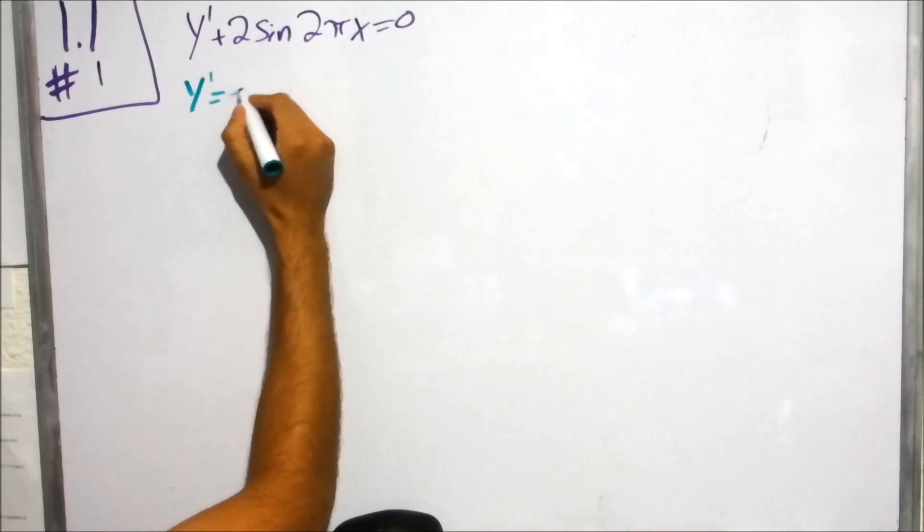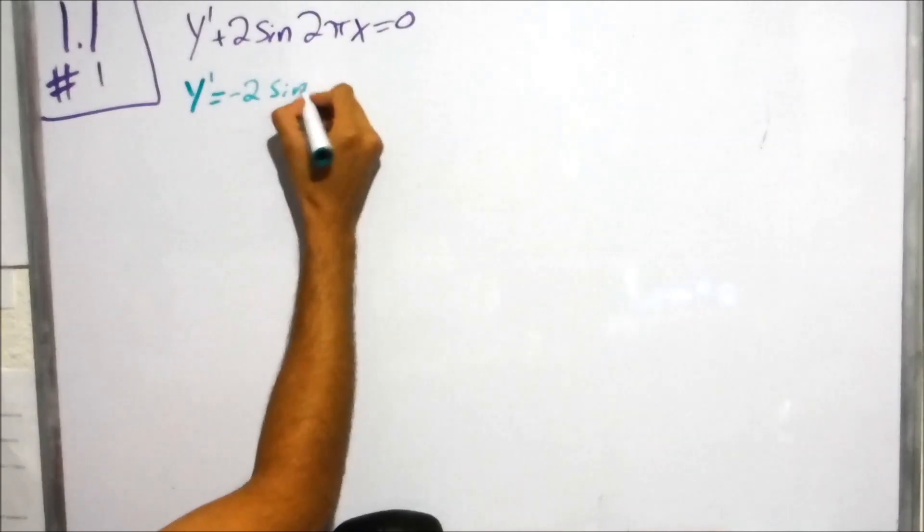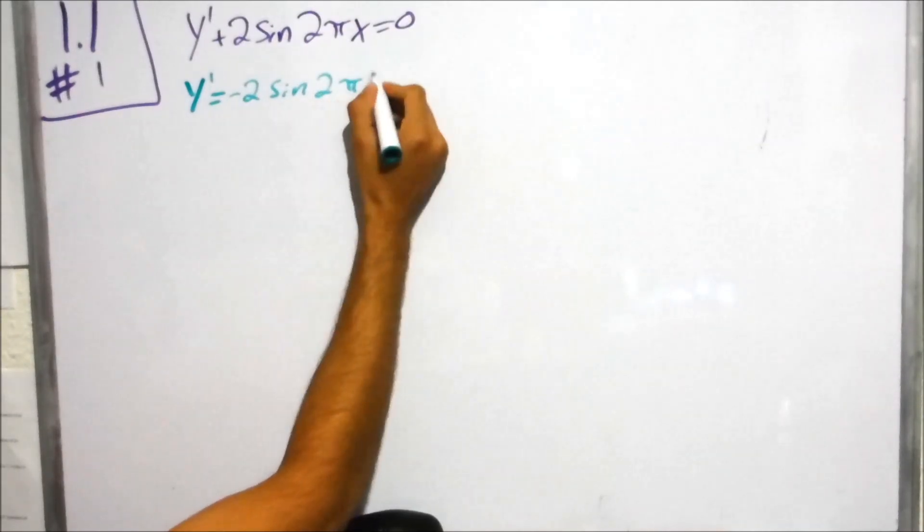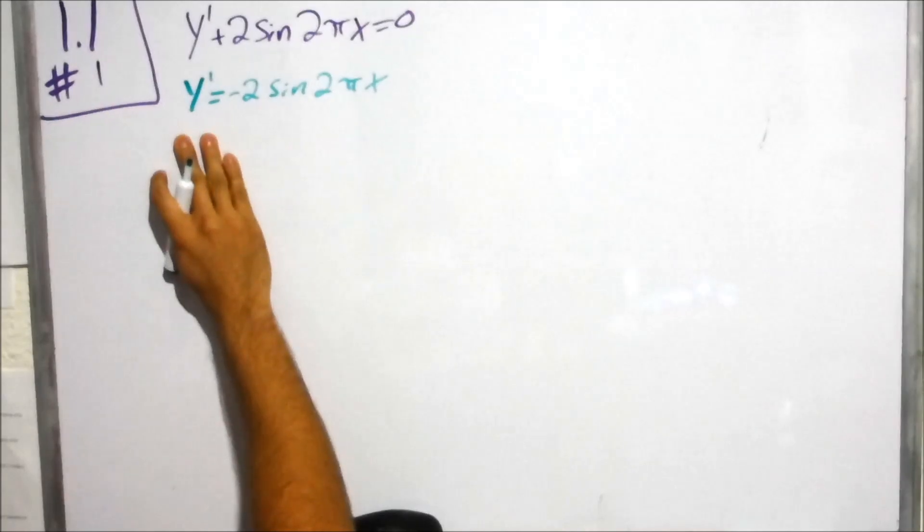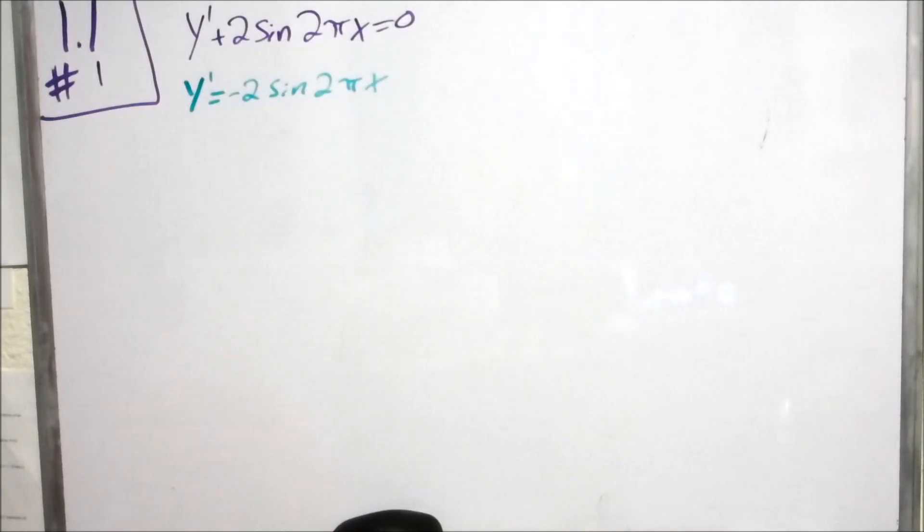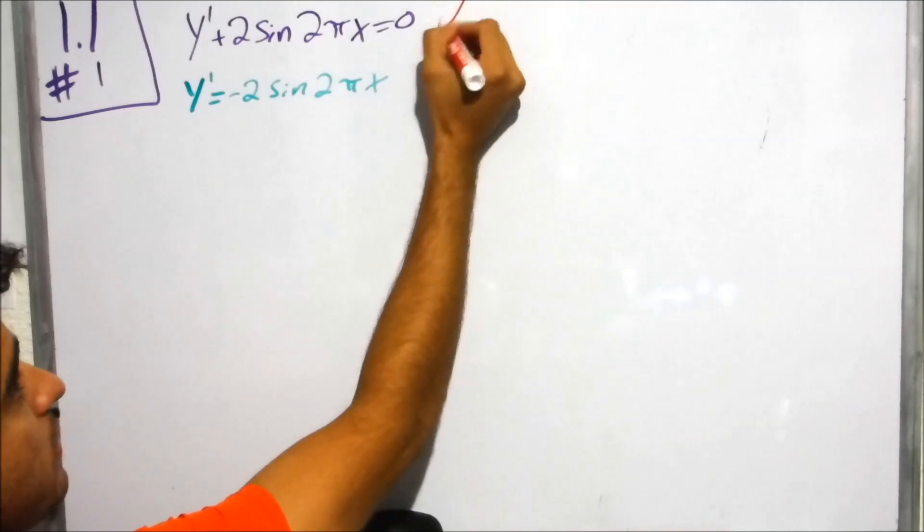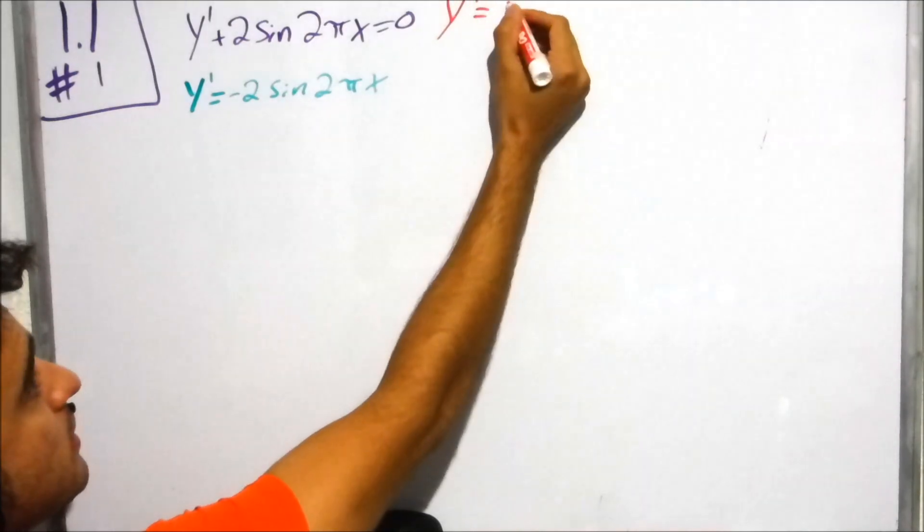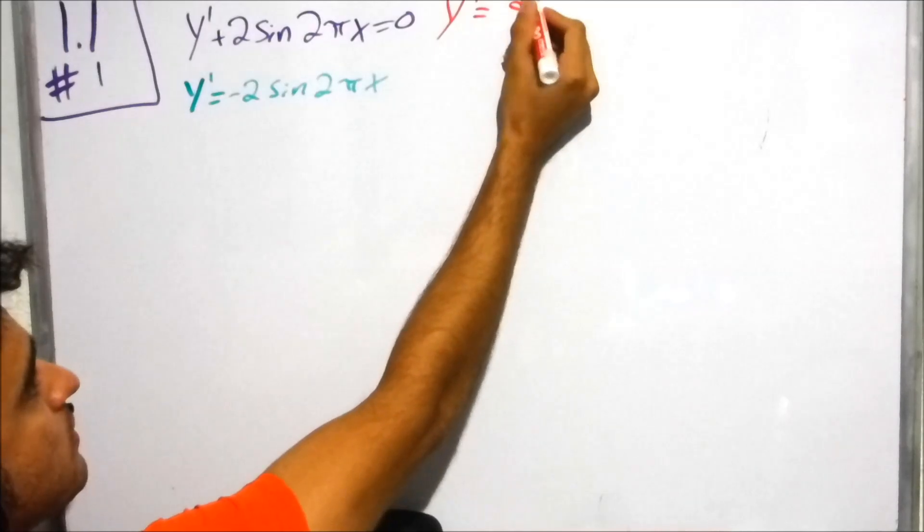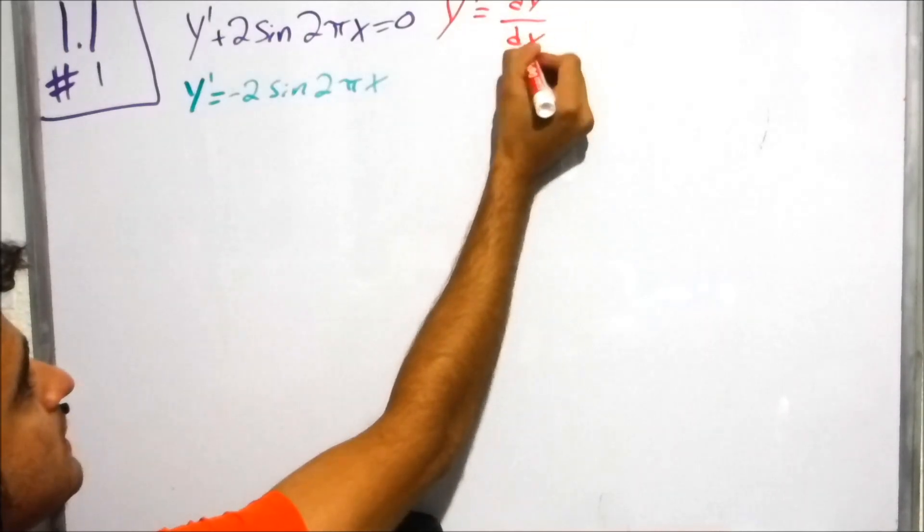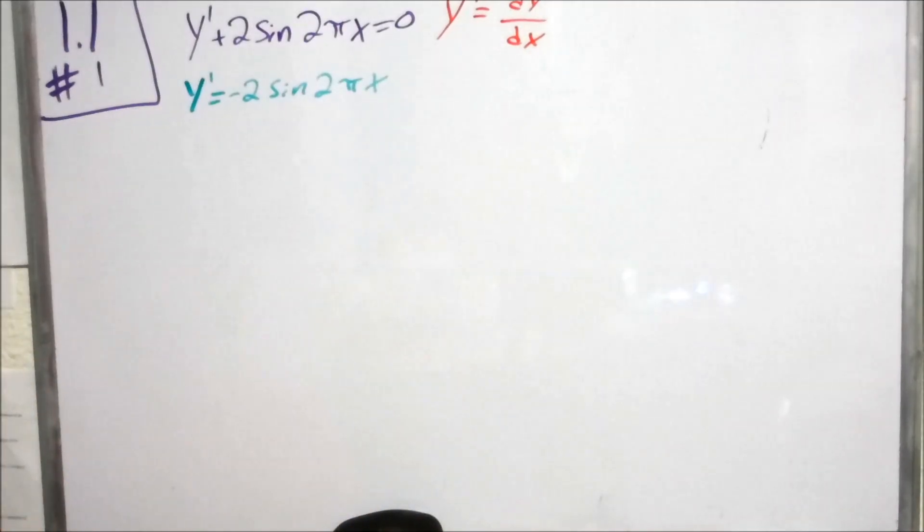Moving over, subtracting negative 2 sine of 2 pi x from both sides. The number one thing is part of the huge theory. To remember, as you know from calculus itself, is that y prime is merely nothing more than dy over dx. That is what it represents.